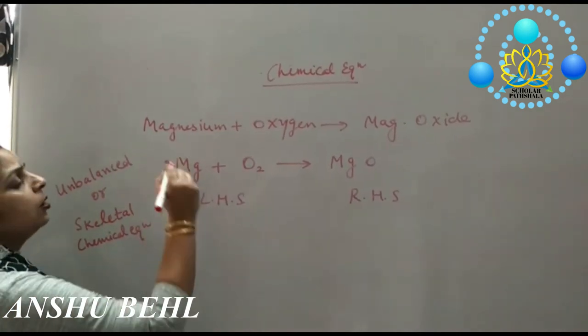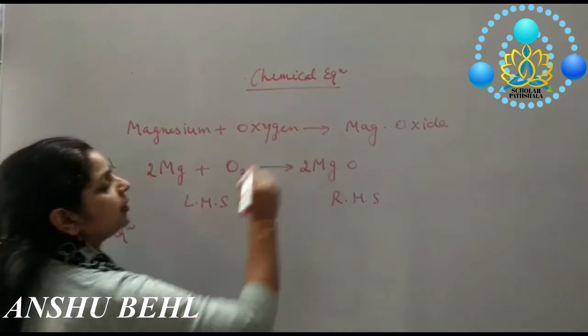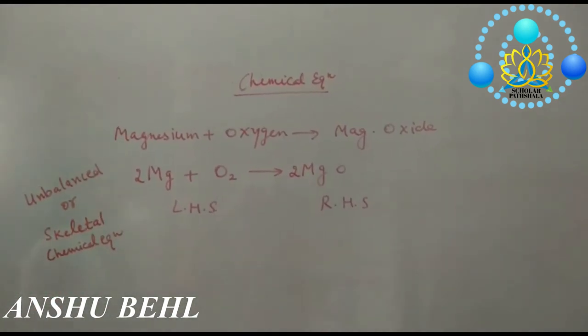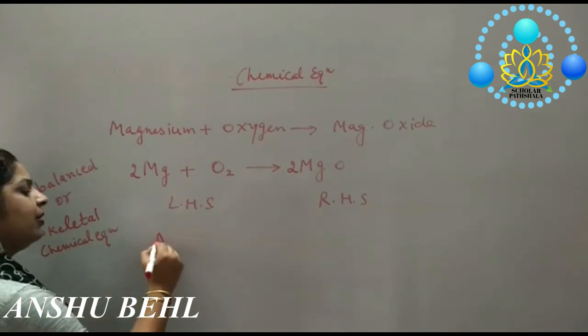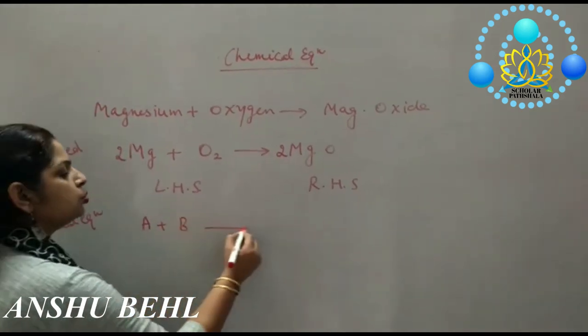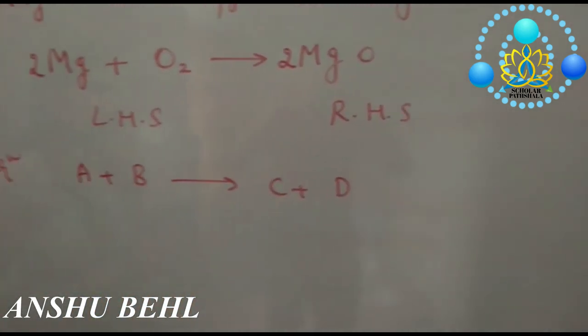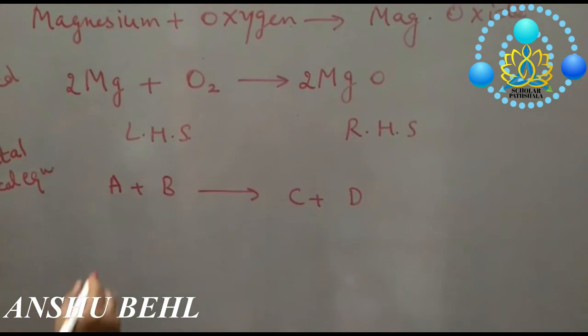We are writing here 2 to make it a balanced chemical equation. Now, how can this equation be made more informative? If you have A plus B which turns to C plus D and you want to make this equation more informative, what information can you add?